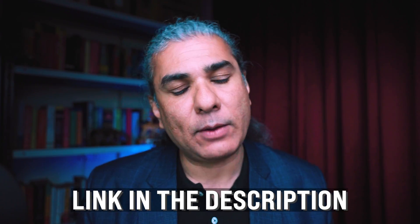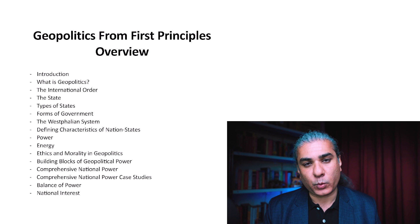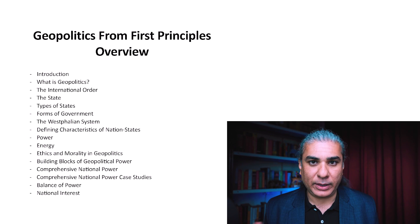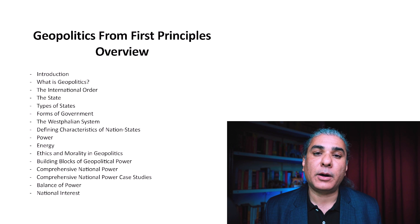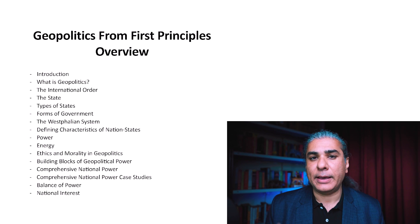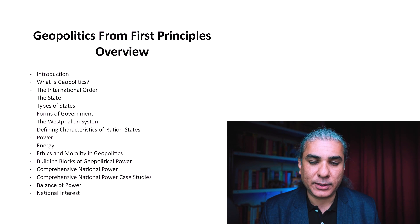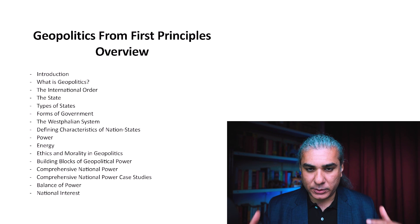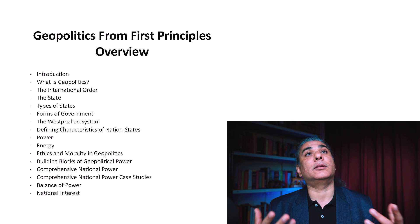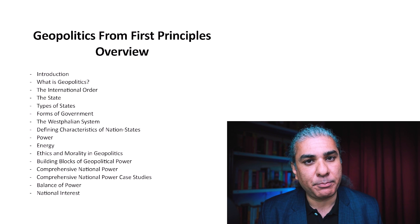Let's quickly take a look at what the course looks like, its structure, and its component modules. First, I'm going to answer the question of what is geopolitics. Then I'll talk about the international order — the rules-based world order that currently governs the world. Then I'll cover the concept of the nation-state, which is central to geopolitics, followed by types of state and forms of government. Then I'll discuss the Westphalian system, its history, its six basic pillars or principles, and their shortcomings and drawbacks. After that, I'll cover the defining characteristics of nation-states.